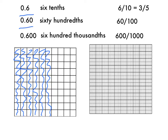That's also showing that there are sixty-hundredths. Now, if I want to show six-hundred-thousandths, I can do the same thing on this grid. I'm still shading in six-tenths, which is the same as sixty-hundredths, but it's also the same as six-hundred-thousandths.